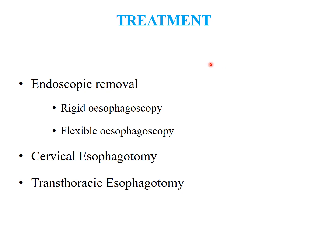Treatment: once the diagnosis of a foreign body is made, it must be removed by endoscopy. ENT surgeons perform rigid esophagoscopy — the esophagoscope is passed, the foreign body is visualized, grasped, and removed. Sometimes flexible esophagoscopy done by gastroenterologists can also remove the foreign body. For foreign bodies difficult to remove without causing perforation, cervical esophagotomy or trans-thoracic esophagotomy is carried out, because cervical or thoracic perforation is a very fatal complication.